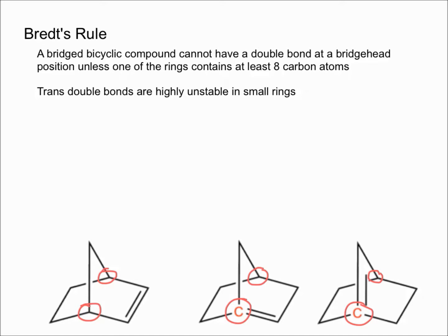The rule says that a bicyclic compound can't have a double bond at a bridgehead position unless one of the rings has eight carbons. If you count the ones on the bottom right, these two, you can count the number of carbons in the ring. One ring will have five, one ring will have six carbons.